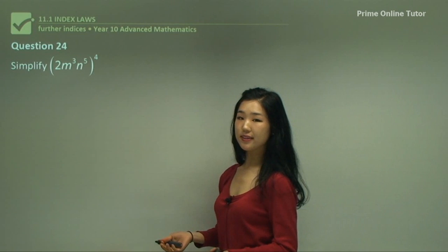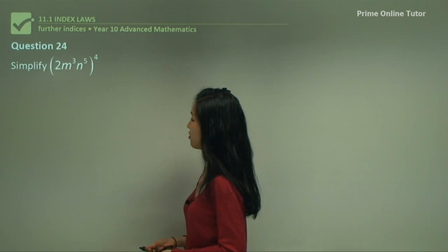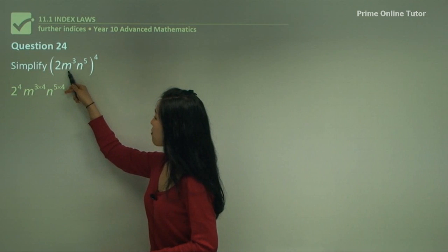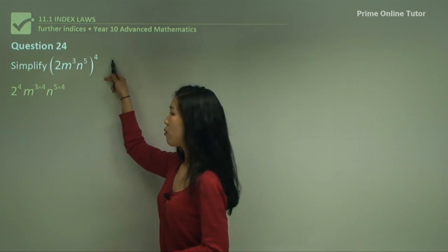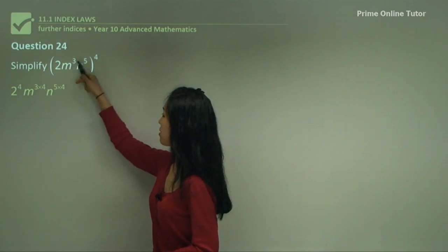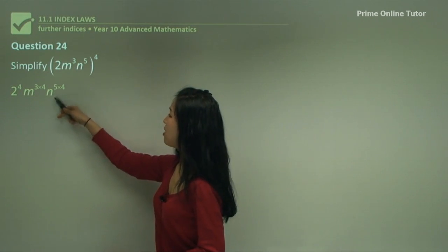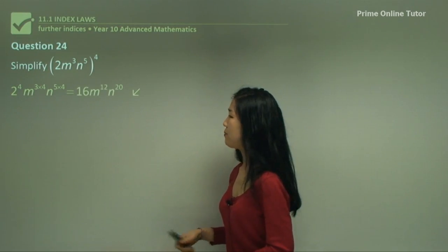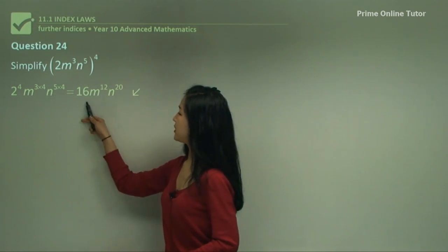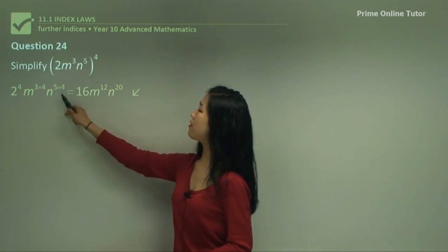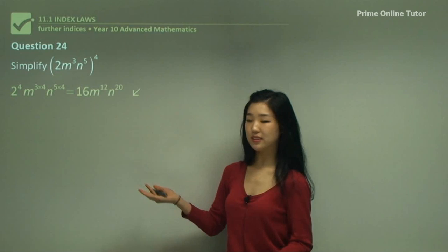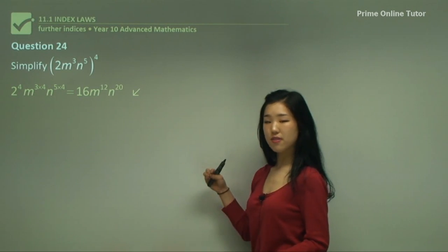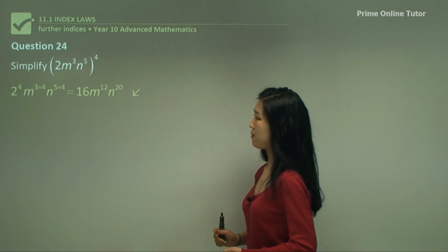Question twenty-four. Same thing as the previous two questions. 2 to the power of 4, m cubed to the power of 4 gives m to the 3 times 4, so we multiply the powers together. Same with n — multiply 5 and 4 together as a new power. That becomes 2 to the power of 4 is 16, 3 times 4 is 12, and 5 times 4 is 20. As long as you remember to apply it to every single term inside the bracket, it's no problem.